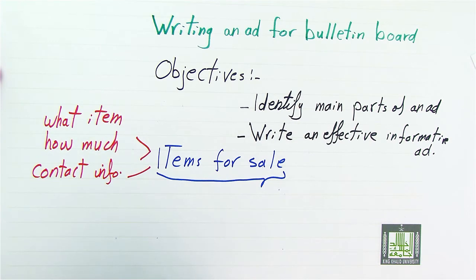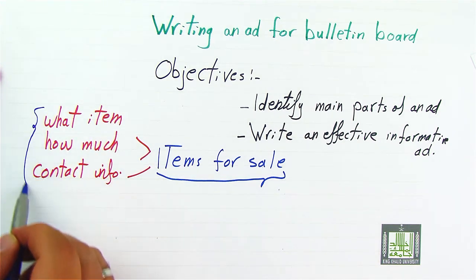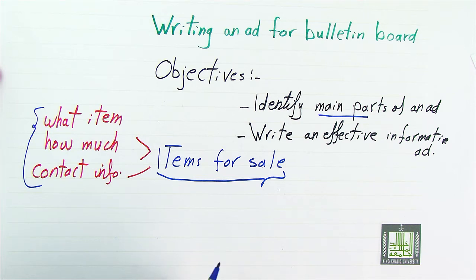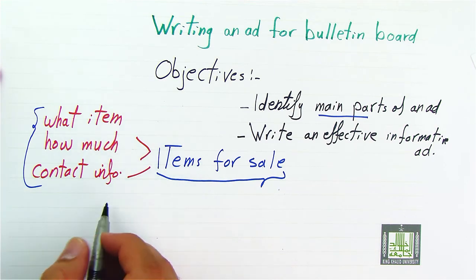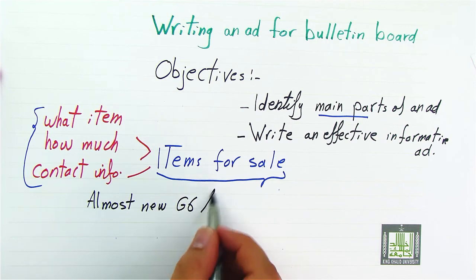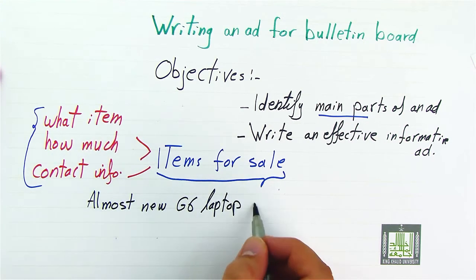We are going to write an ad together and we will see how we have achieved and met these three main parts. For example, we are going to write an ad about a laptop. I have a laptop and I want to sell it. What can I write as an ad to attract people to buy it? Let's start together: 'Almost New G6 laptop computer'